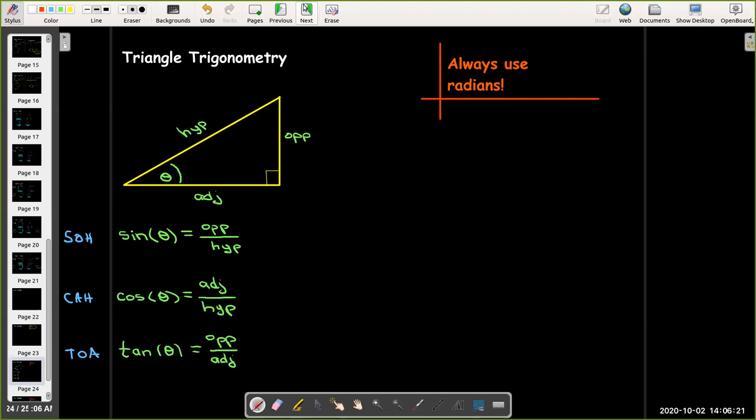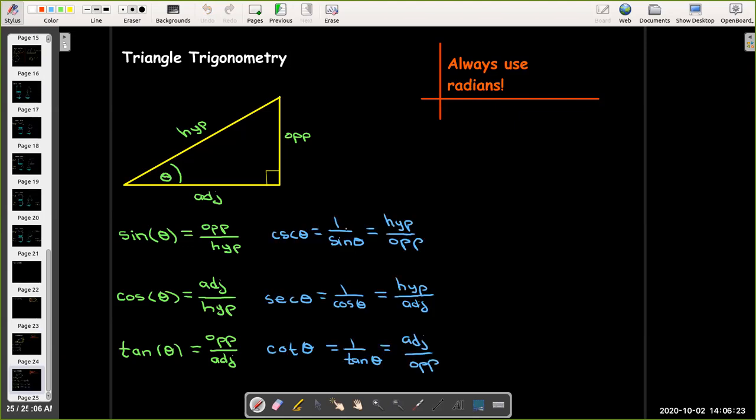And then we may need to use the reciprocals. So cosecant is one over sine, so that would be hypotenuse over opposite. Secant is one over cosine, so that would be hypotenuse over adjacent. And cotangent is one over tangent, and so that would be adjacent over opposite.